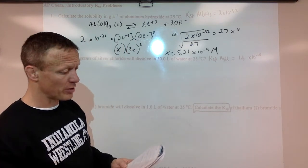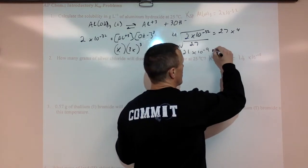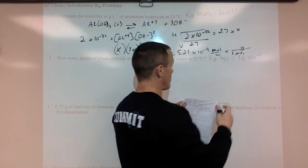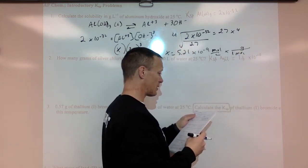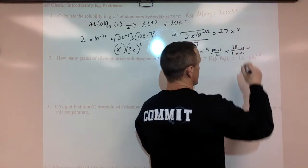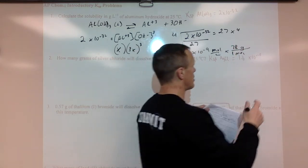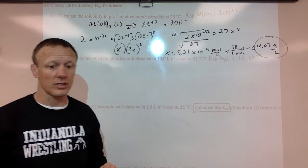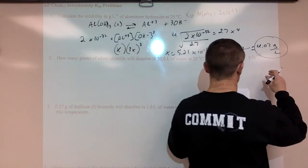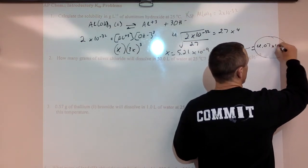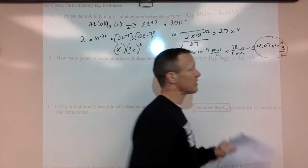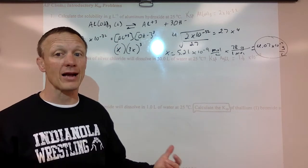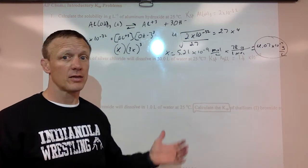It does want this in grams per liter rather than moles per liter. So to go from moles per liter to grams per liter, one mole of aluminum hydroxide is 78 grams per mole. So you can dissolve that many grams, 4.07 times 10 to the negative 7 grams per liter. Really small amount of this you can dissolve. Again, that is the maximum amount. You can dissolve less than that. That is the maximum amount you can dissolve.